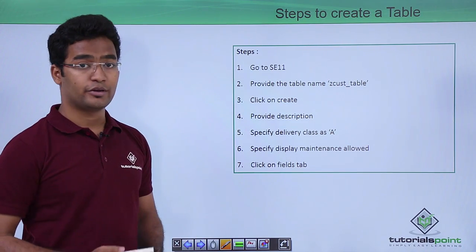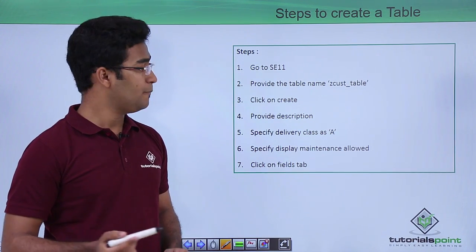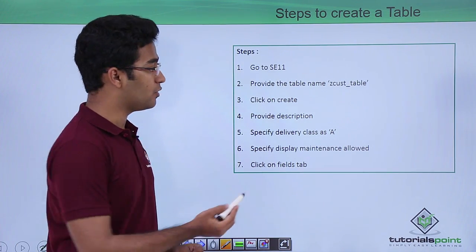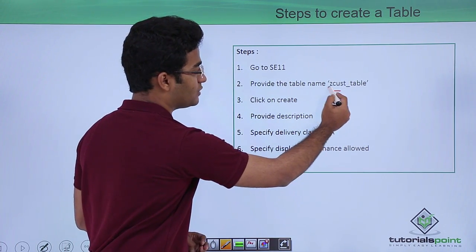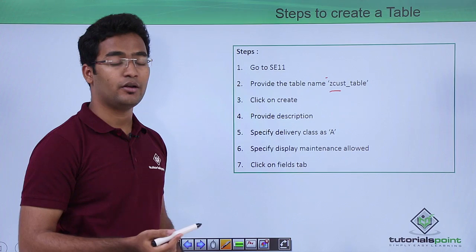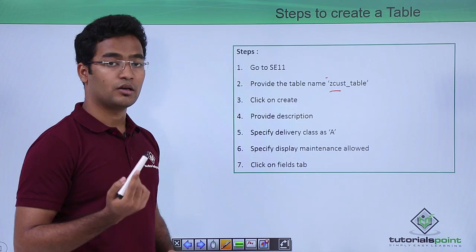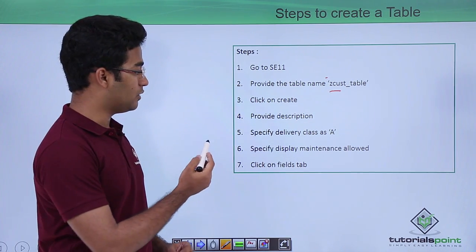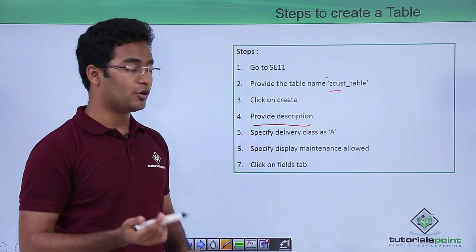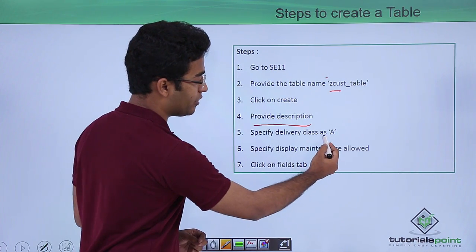These are some of the steps to create a table. First, we have to go to SE11, that is the DDIC screen. There we have to select the database table radio button and in the input box we have to give the name starting with Z — since we are mentioning it as a custom table, Z is important. Then we click the Create button, and the screen that appears requires a short description and the delivery class. For this case, we are providing the delivery class as A.